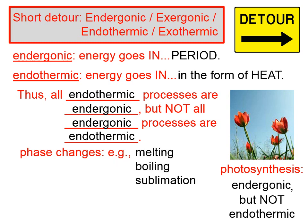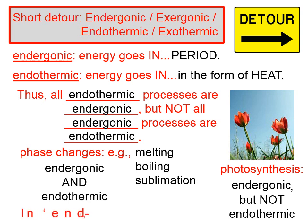A phase change, on the other hand — such as melting, boiling, or sublimation — energy is definitely put in in order to make those processes happen. Specifically, it's put in in the form of heat. So phase changes are both endergonic and endothermic.